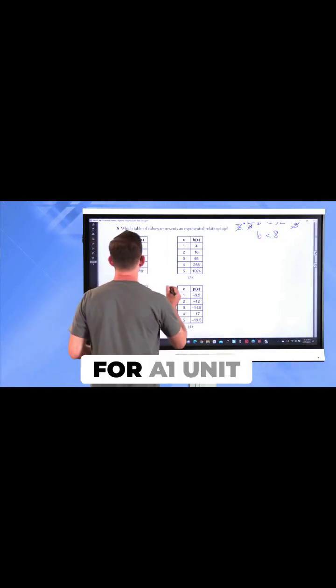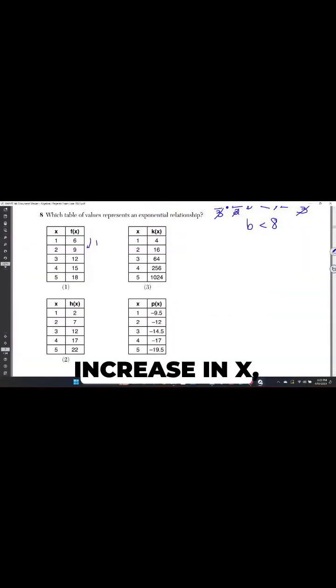Let's take a look. In choice one, for a one-unit increase in x, it looks like each time what I end up doing is adding three to get to the next y.